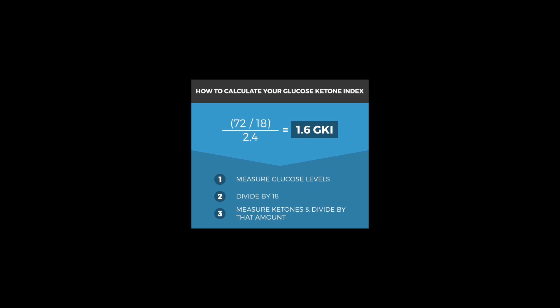Take that number and look at the chart. A 1.6 GKI would be a very high level of ketosis — typically for disease fighting and neurological purposes, but not for weight loss necessarily. 3 to 6 is really ideal, especially if you're dealing with significant weight gain or you're pre-diabetic. 6 to 9 is effective for general weight loss and maintenance, but I'd really like you to strive to be within the 3 to 6 range, which is a good range for most people trying to lose weight.